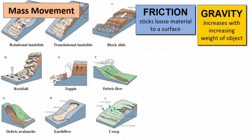We call downhill movements of weathered rock material on Earth's surface mass movement and we can classify the movement into a variety of types based on the type of material and the way it moves.